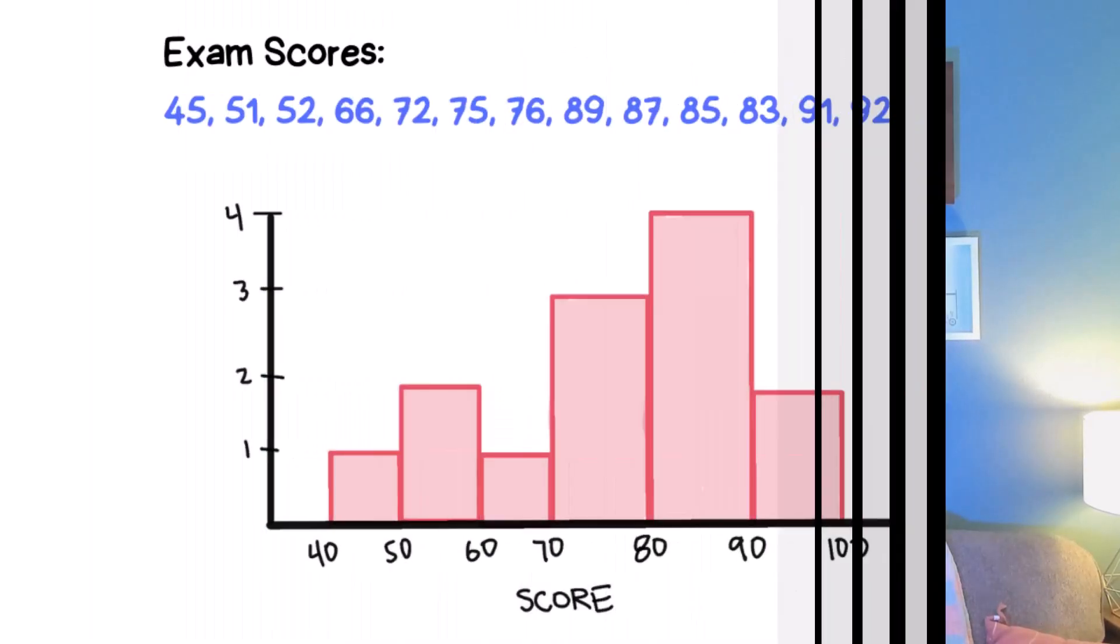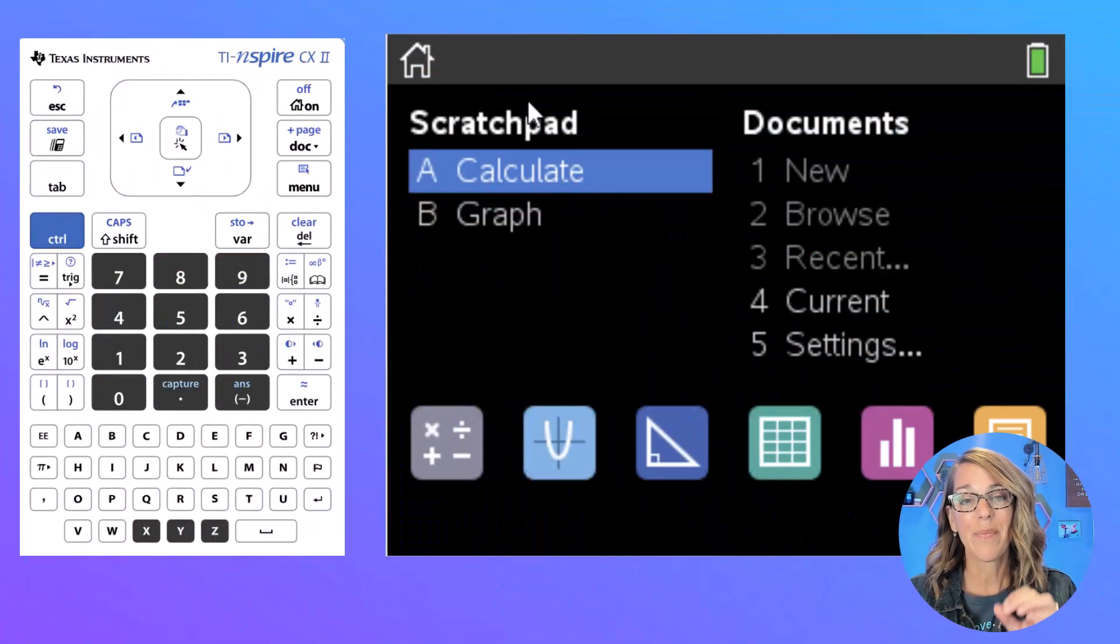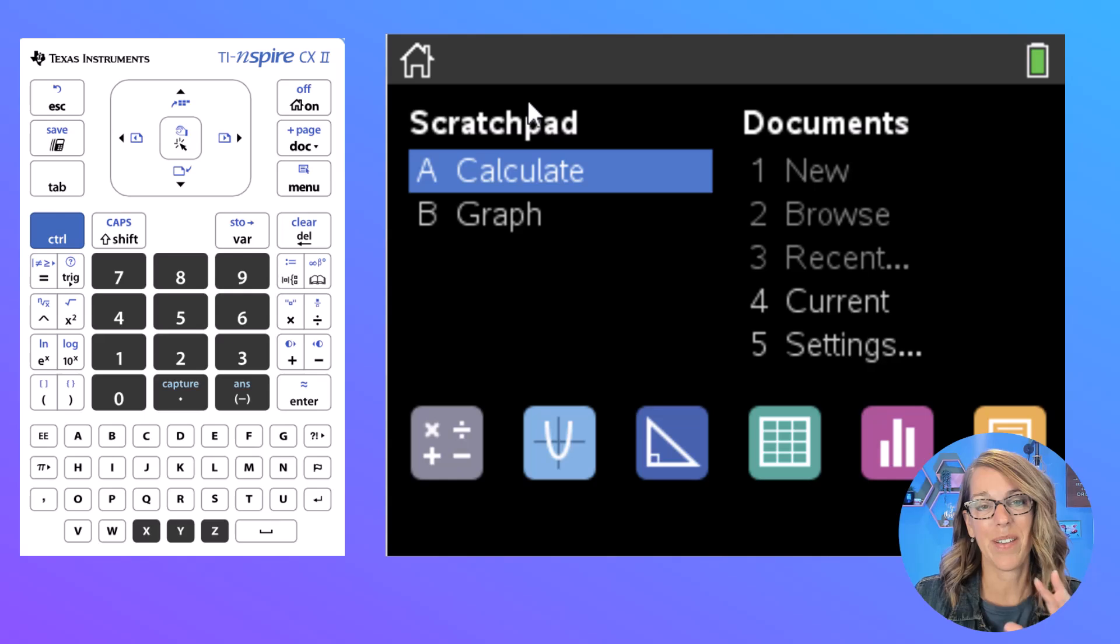I want to recreate this histogram using my TI-Nspire, and you can do this with the CX2 or with the CAS. It doesn't really matter, and I want to start by typing in my data.